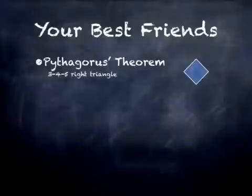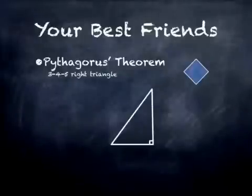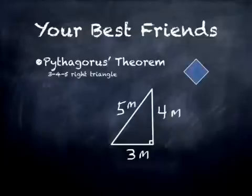You will use it so often it will be one of your best friends. Pythagoras' Theorem deals with right triangles. A right triangle is a triangle where two of the sides are perpendicular at 90 degrees or pi over 2. If our sides measure lengths of 3 meters, 4 meters, the long side — the hypotenuse — would be 5 meters. This is known as a 3-4-5 right triangle.